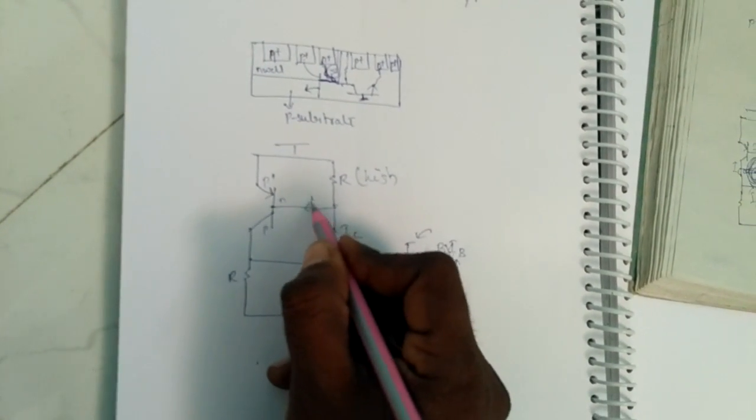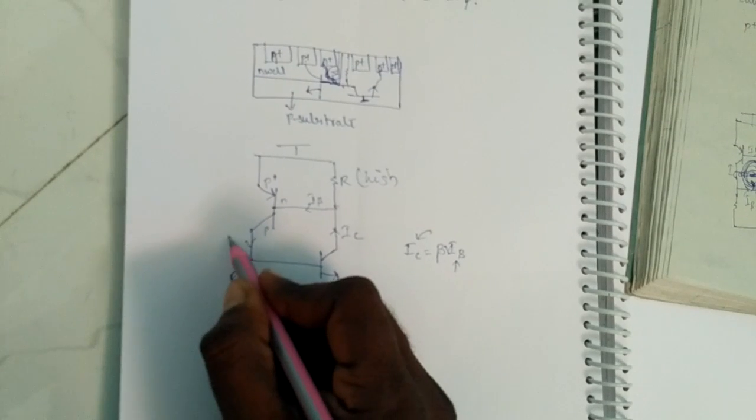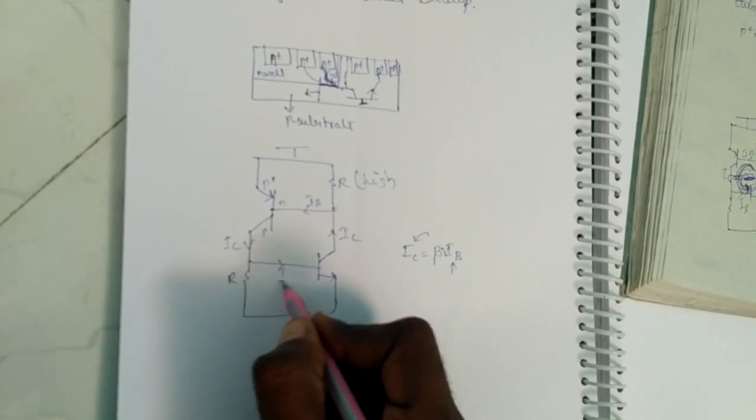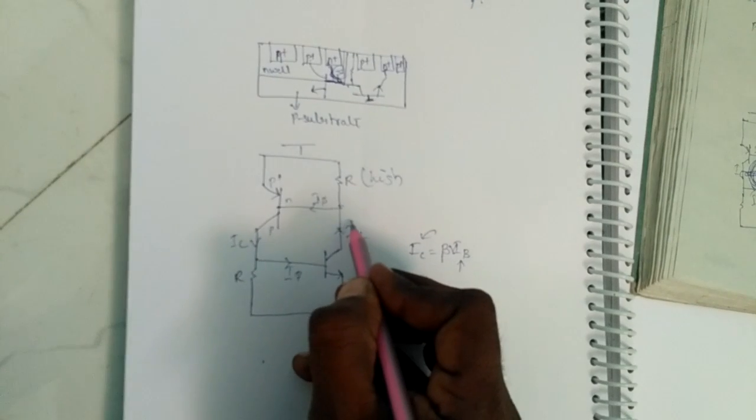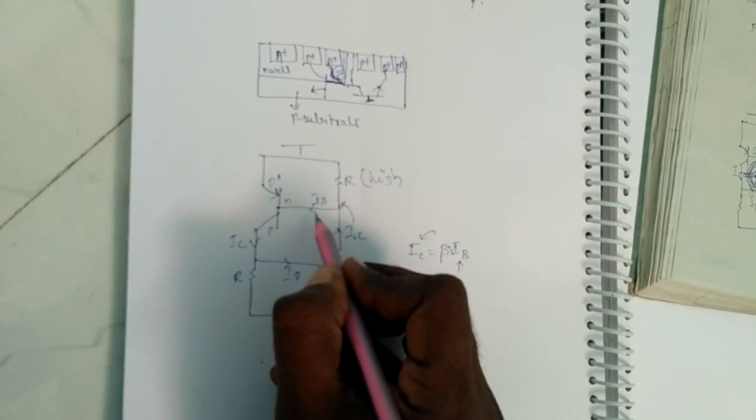This is IC, this is IB, and again it is IC, this is IB. We will see once we have an equation that IC equals beta into IB.